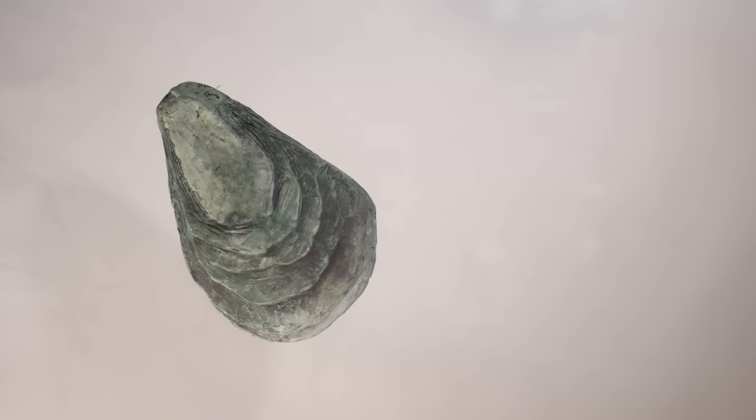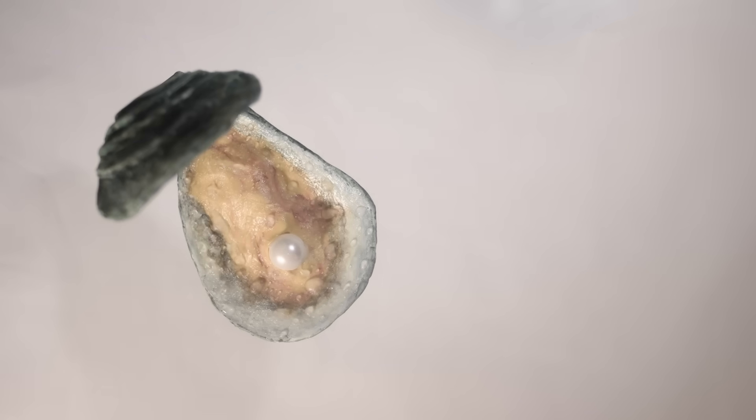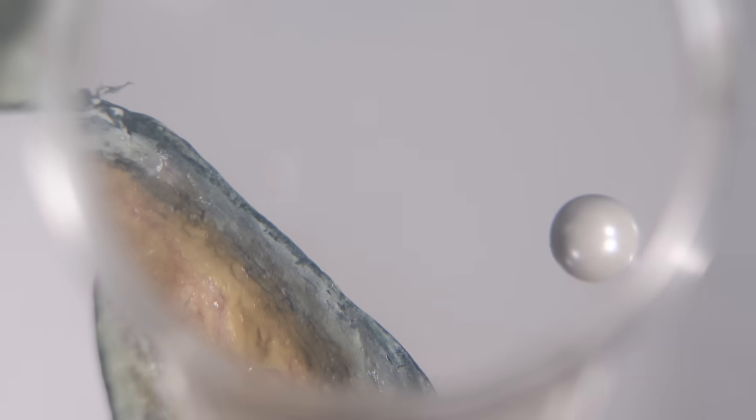While most people wouldn't consider the crusty exterior of an oyster to be particularly beautiful, opening up this craggy case might reveal an exquisite jewel nestled within. Yet despite their iridescent colors and smooth shapes, pearls are actually made of the exact same material as the shell that surrounds them.